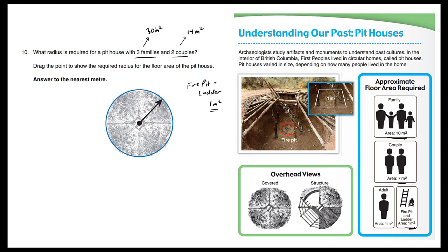So adding these total areas up, we have 30 plus 14 plus 1, which is 45 meters squared. So 45 meters squared is required for this home.